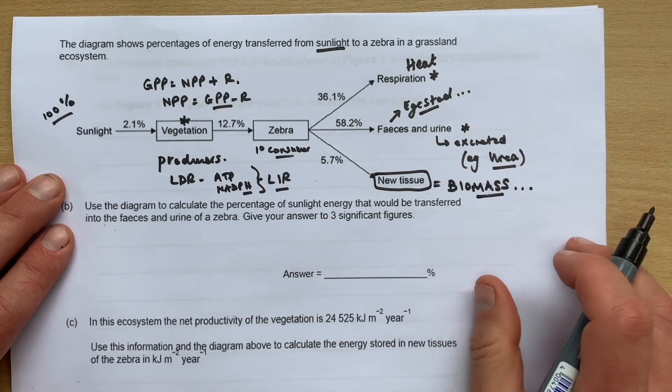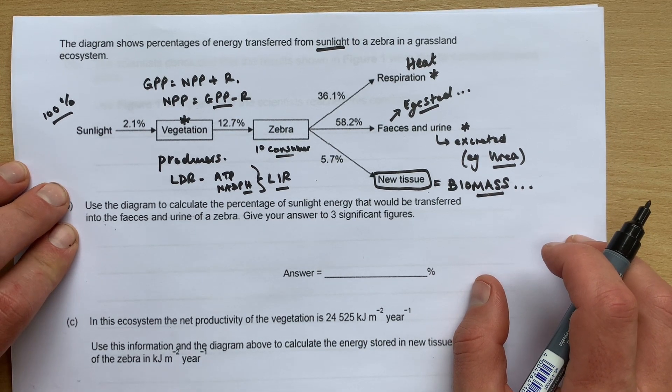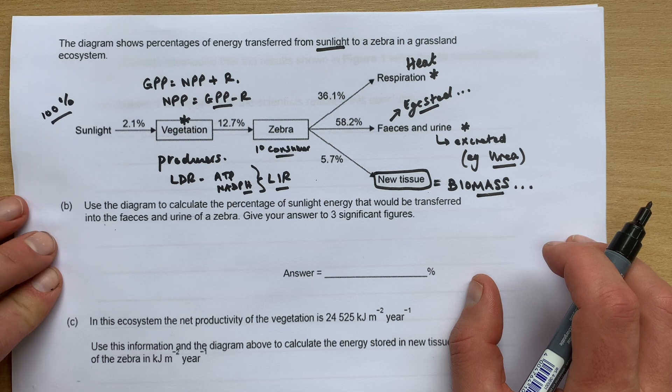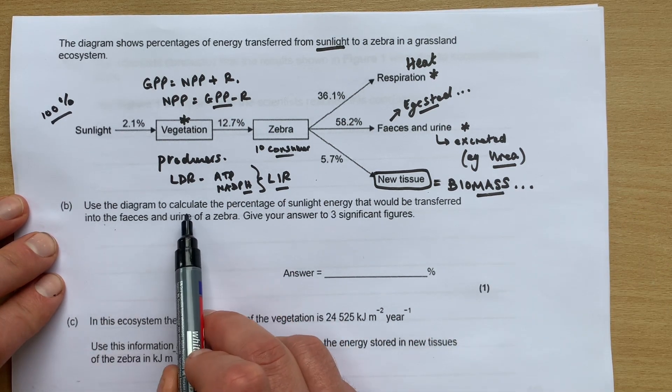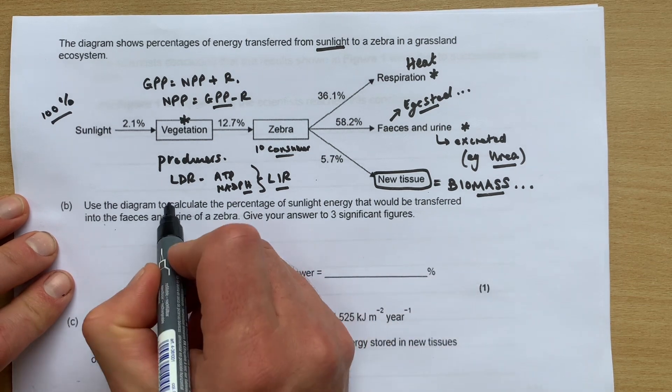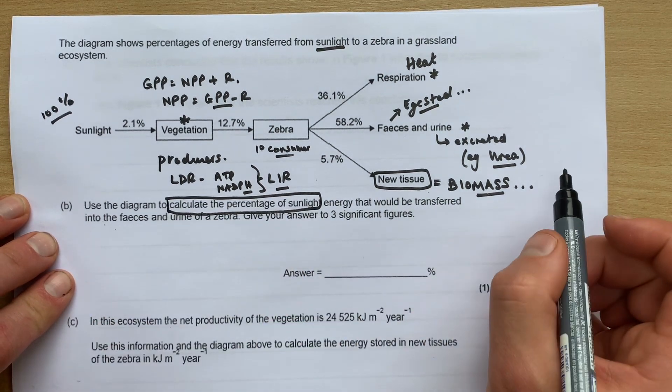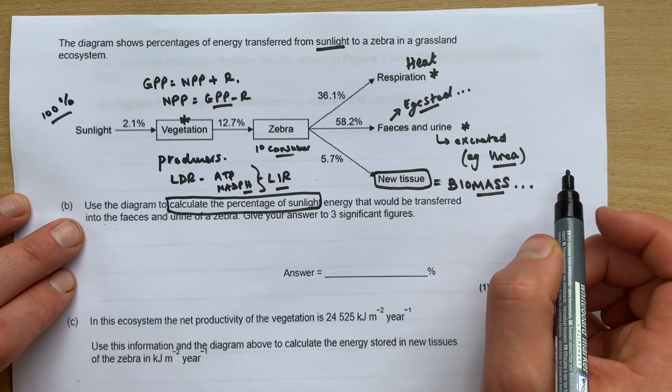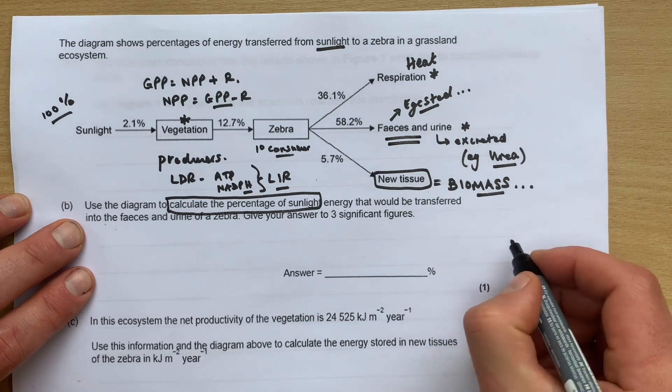And we know biomass is the dry carbon molecules that make up the cells and tissues of the zebra - the phospholipids, the DNA, the proteins. So the question says use the diagram to calculate the percentage of sunlight that would be transferred into the faeces and urine of the zebra.